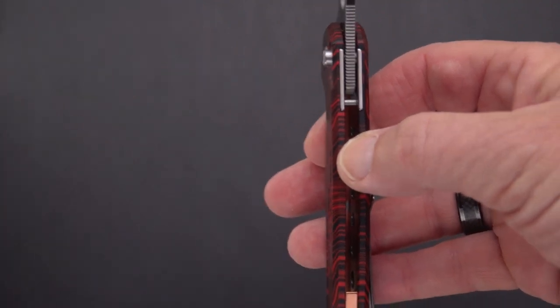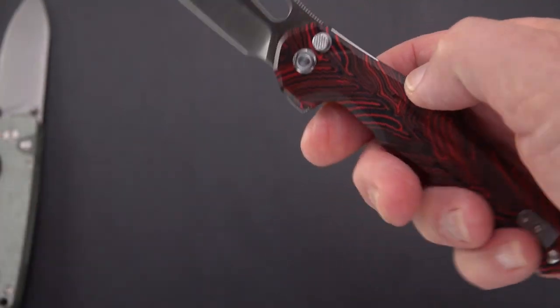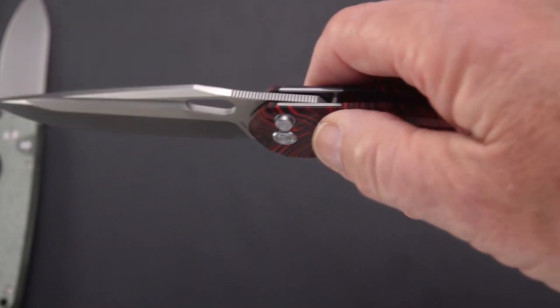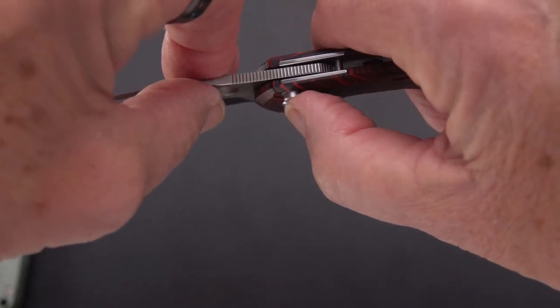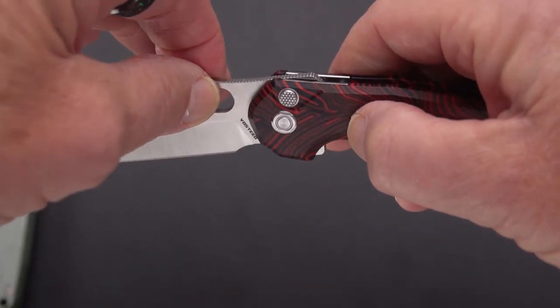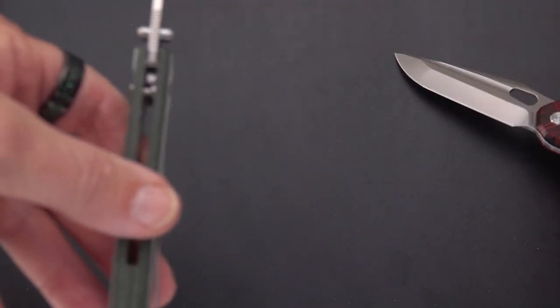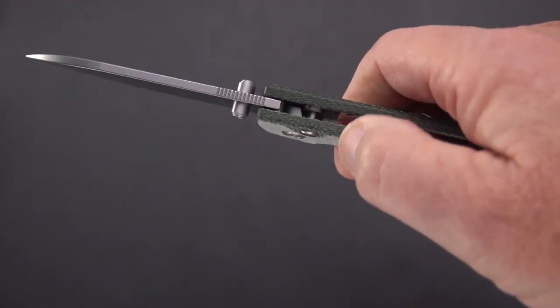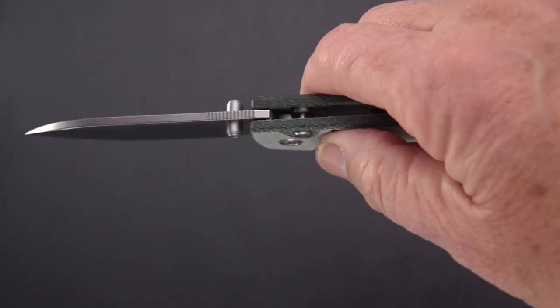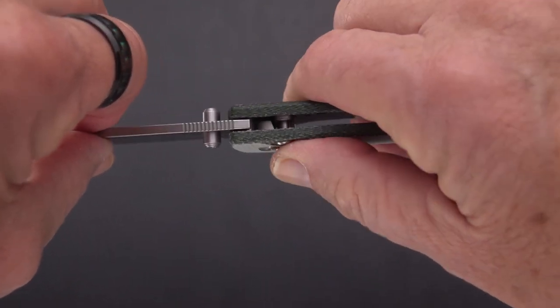I haven't disassembled it by any means, but my guess is that that plunge lock is going through the blade at a point rather than blocking the blade where you can see the plunge lock here.